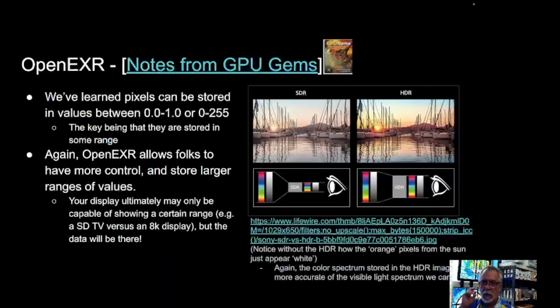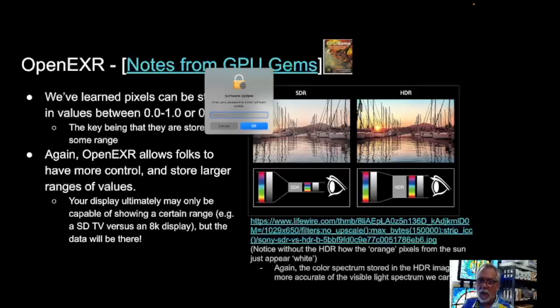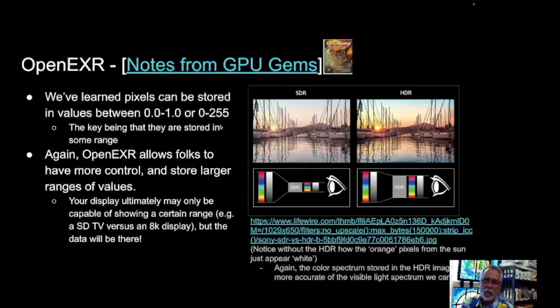We store pixels between zero and one, and they're stored in some range. There's a system called OpenEXR that allows you to map them in such a way that you can do that. Again, we're not making the monitor render more images — we're manipulating the image such that when the human sees it on the monitor, they see more details.